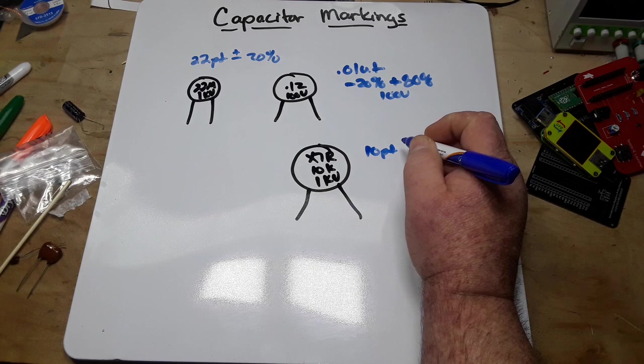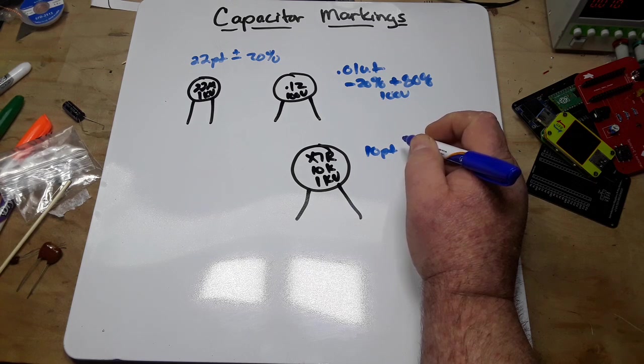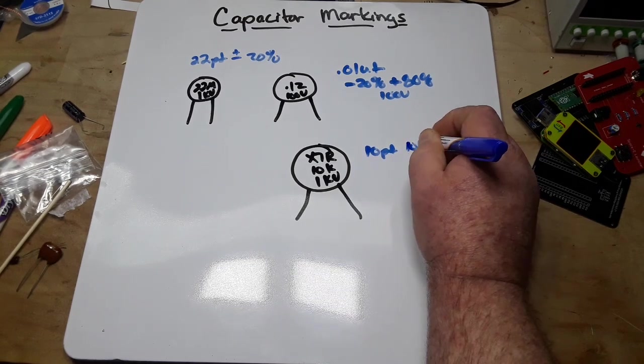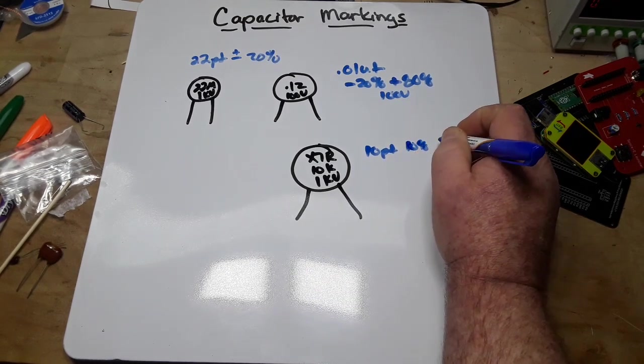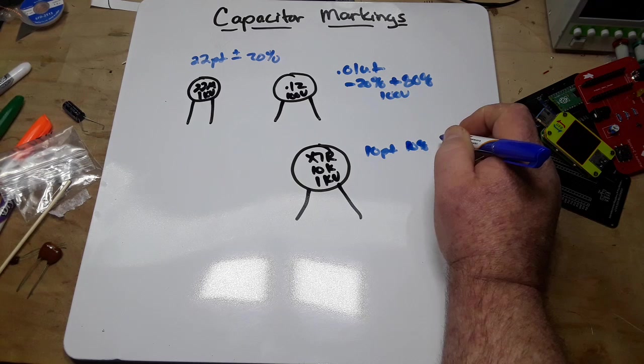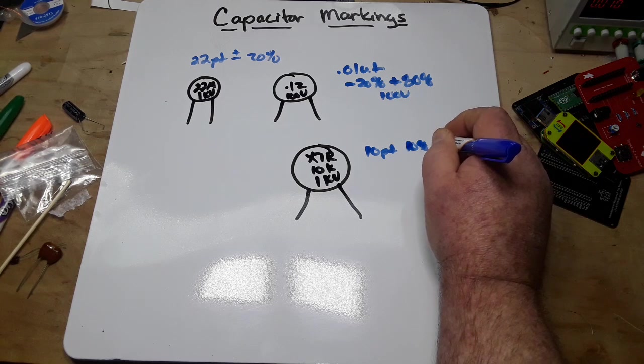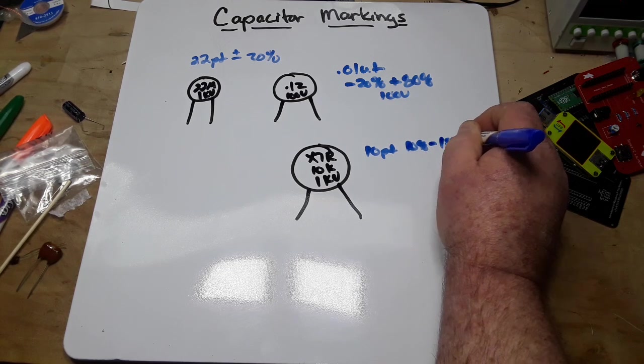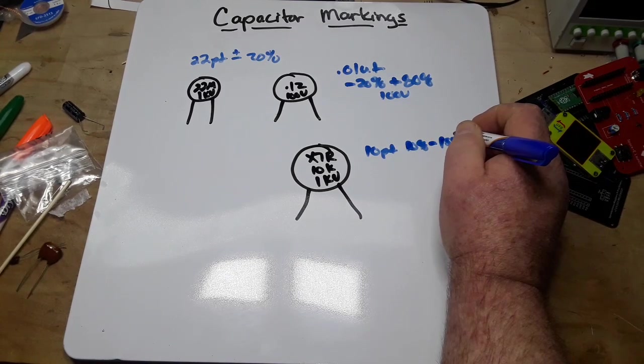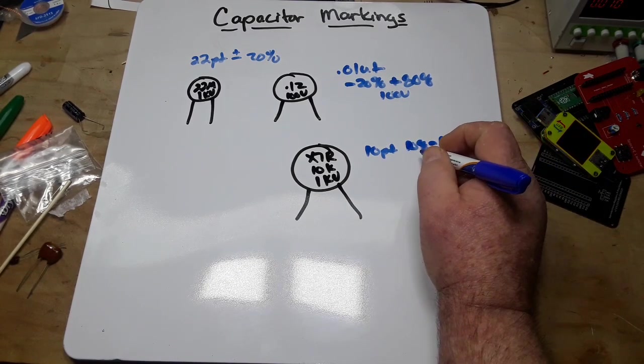And then we have our R code, which is... what is it... 10 to 15% variation.